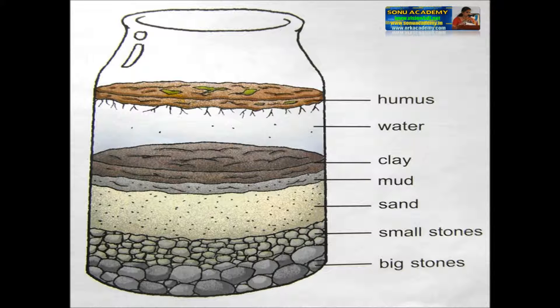Observe the different layers. At the bottom will be small stones called gravel. Above them will be a layer of soil containing large particles — these are sand particles, which you can see separately. Above the sand you will observe a layer of very fine particles that you cannot see separately. This is a layer of clay.